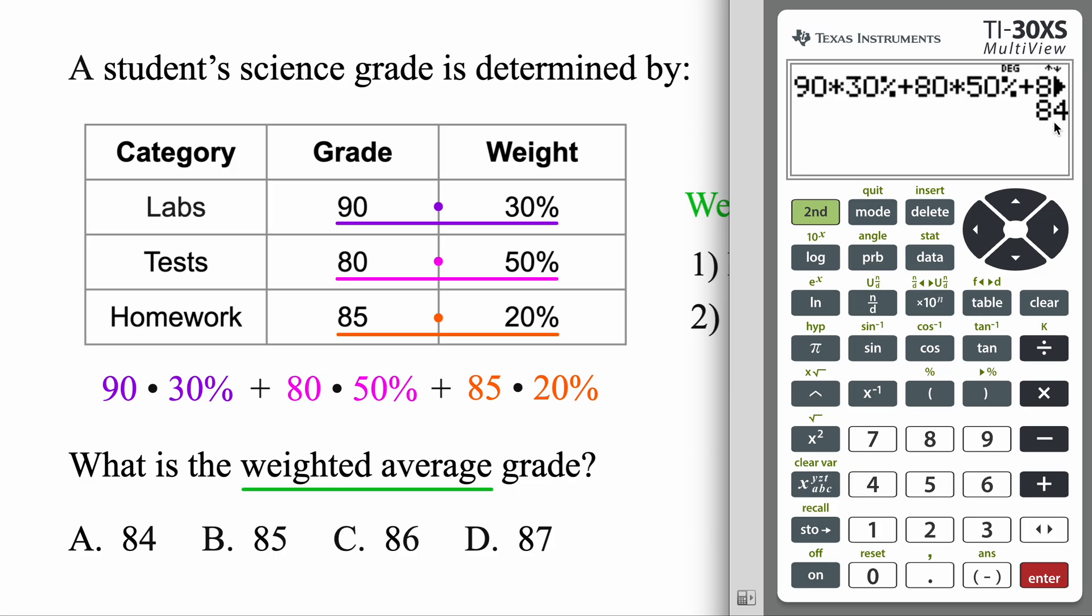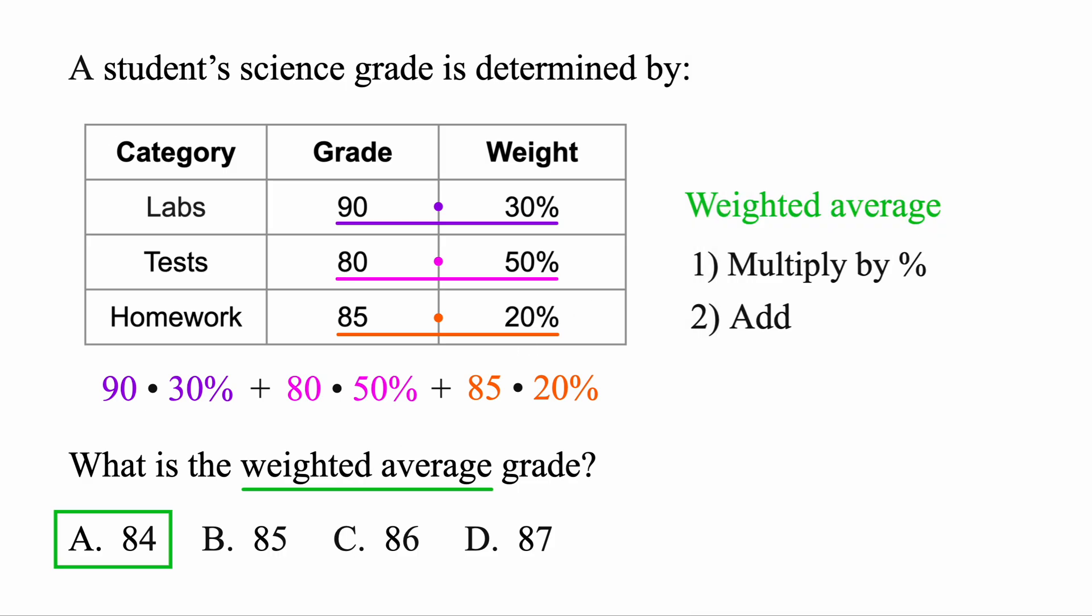So 84, this is the correct weighted average grade in this class here. But remember, we got an 85 when we did the normal average. Because it's weighted heavily on tests, and we didn't do as well, that's why it pulled the grade down a little bit more to an 84 there. So that's it. That's how you can calculate any weighted average: multiply it by the percent that you have, and then add all the values together.